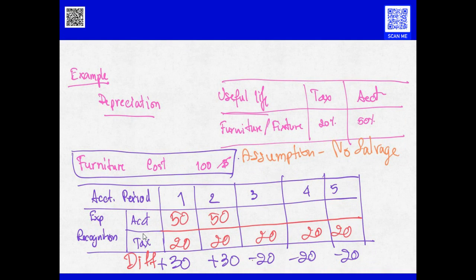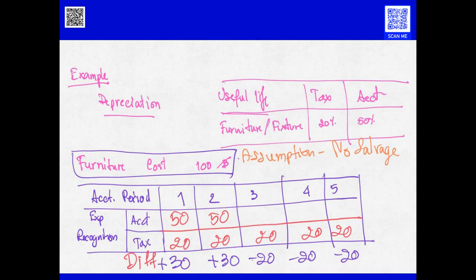In the second year it is also the same — the expense is recorded at 50 baht, which exceeds the amount tax allows for that depreciation by 30 baht. In the third, fourth, and fifth years, since the asset is fully depreciated in accounting, there is no depreciation expense in accounting. But tax still allows 20 baht expense each year. So in the corporate tax computation for years 3, 4, and 5, we can deduct the expense at 20 baht each. The difference from year 1 and year 2 totaling 60 baht is recognized as expense in tax over those three years, at 20 baht each.